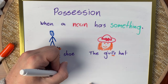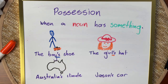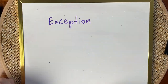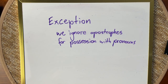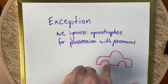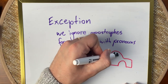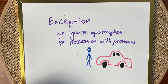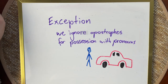Proper nouns also get these: 'Australia's climate,' 'Jason's car' — the noun gets an apostrophe to show ownership or possession. However, there is an exception to the rule: we ignore apostrophes when it comes to pronouns. Pronouns are a kind of word we can swap out for a noun. The reason is mostly because a pronoun can often be contracted, and it would cause confusion if we had possessive apostrophes and contraction apostrophes for pronouns.